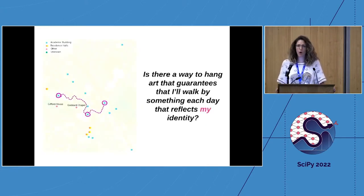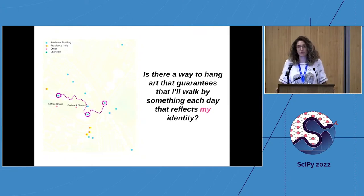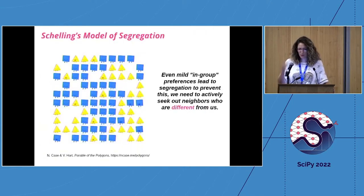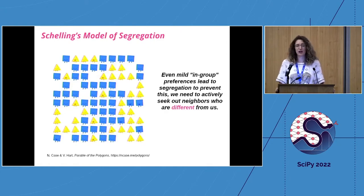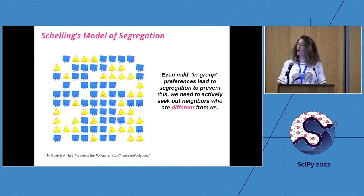The provoking question when generating this toolkit was: how do we curate art for a university so it falls more in step with the student body? I was thinking it would be nice to walk by a lot of art by women and art that speaks to my identity. But then I remembered Schelling's model of segregation — a Nobel Prize-winning agent-based model — which suggests you want to be more generous in accepting things different from you. Mild in-group preferences lead to segregation. If you are not familiar with the Parable of the Polygons by Nikki Case and Hart, I suggest you check it out.